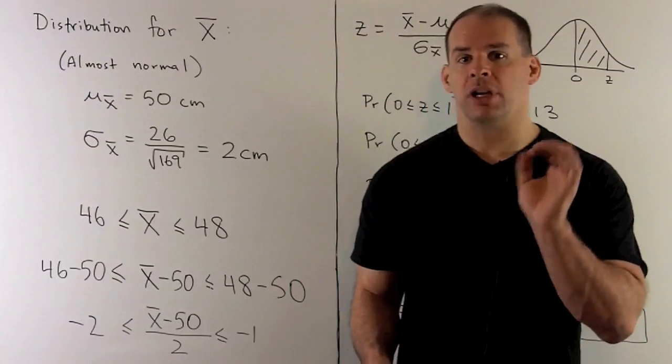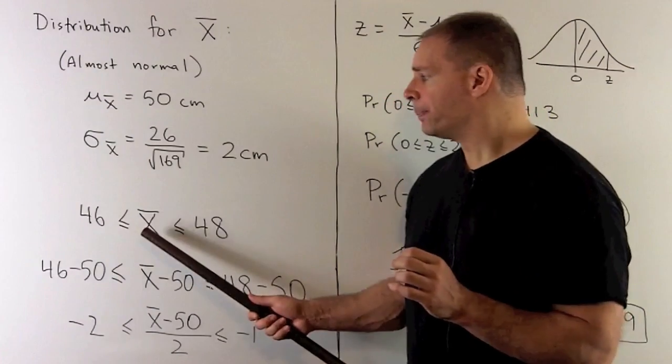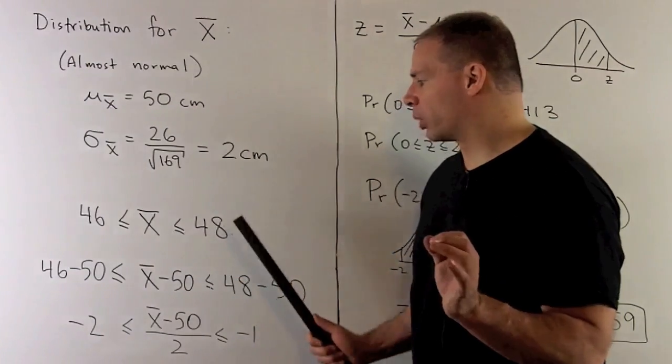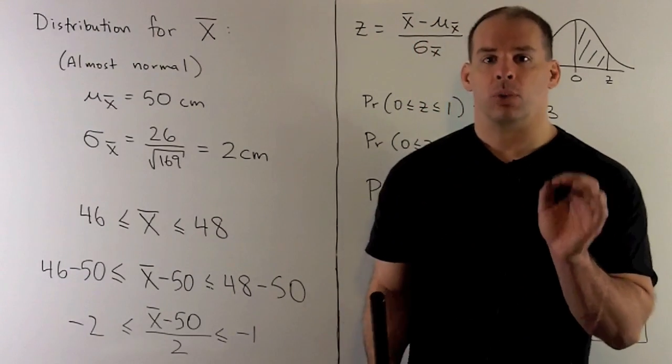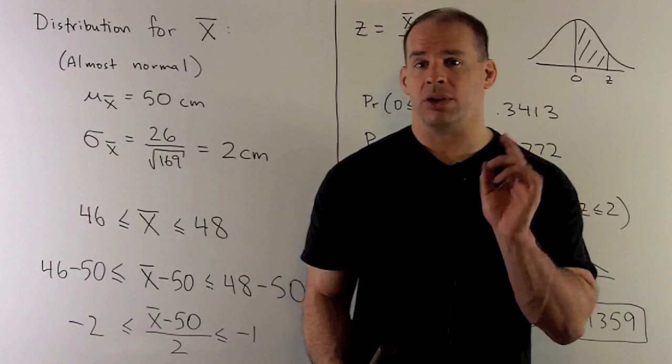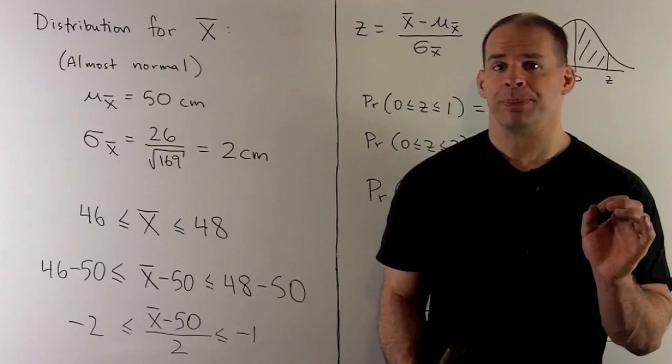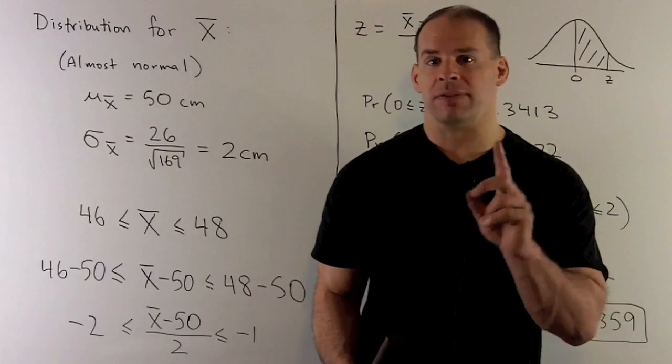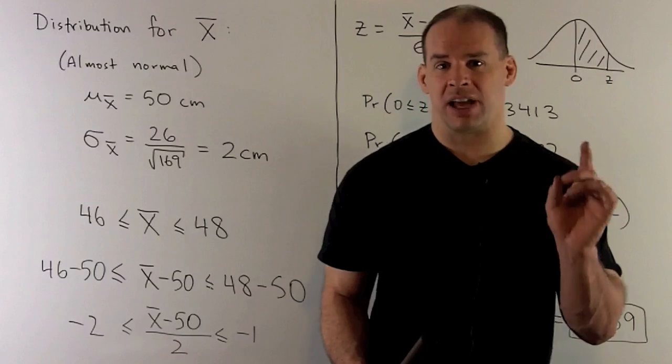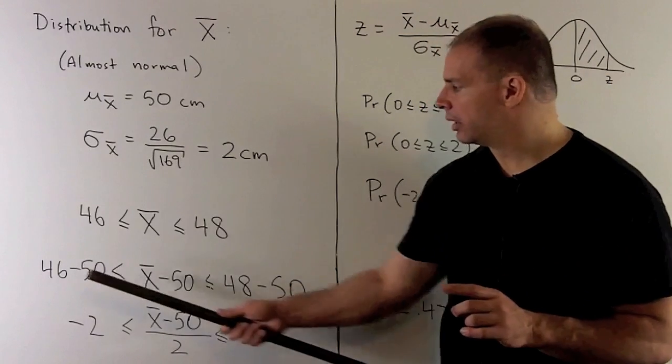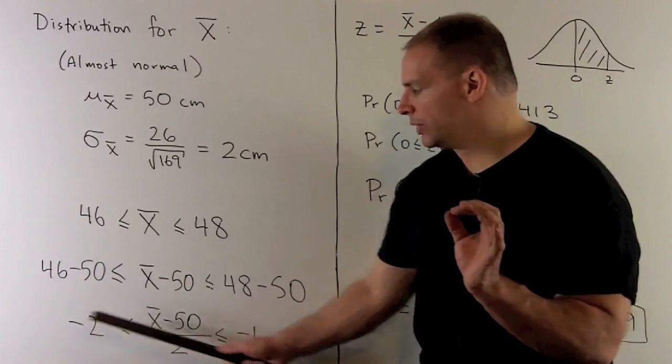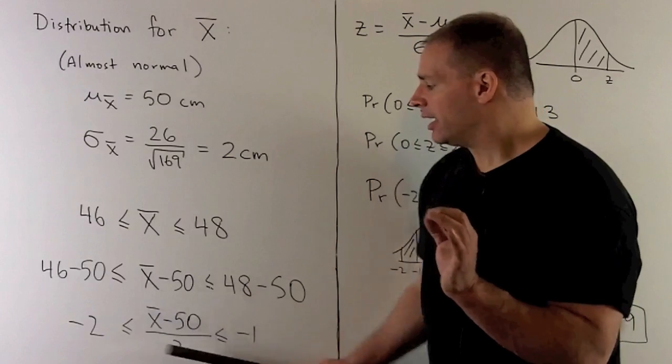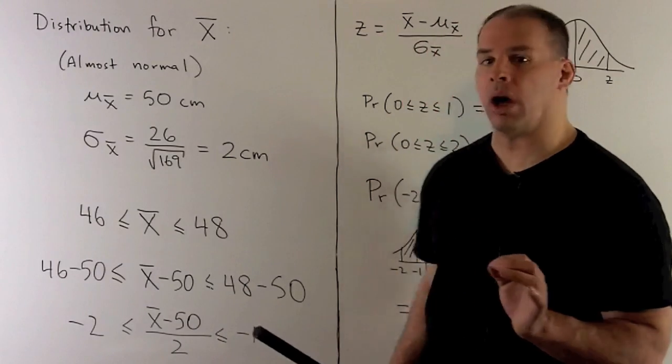We're interested in knowing when the mean of our sample is between 46 and 48. We're going to have to normalize this so that we can use the standard normal distribution. We subtract the mean off of each term, then divide by the standard deviation. When we do that, our z is going to be between minus 2 and minus 1.